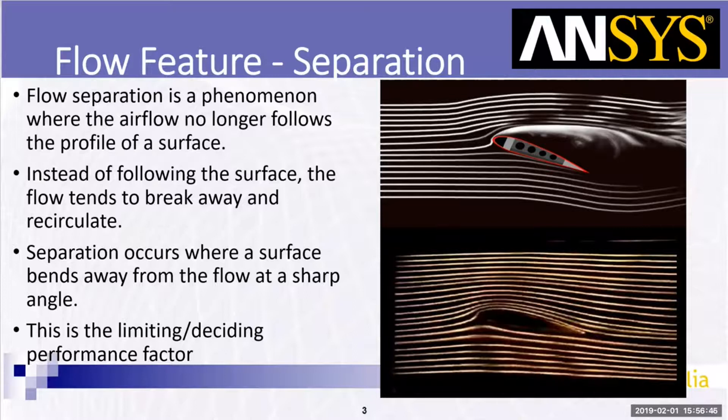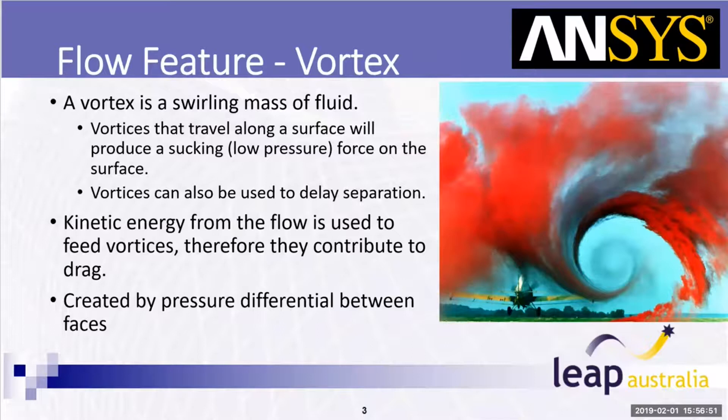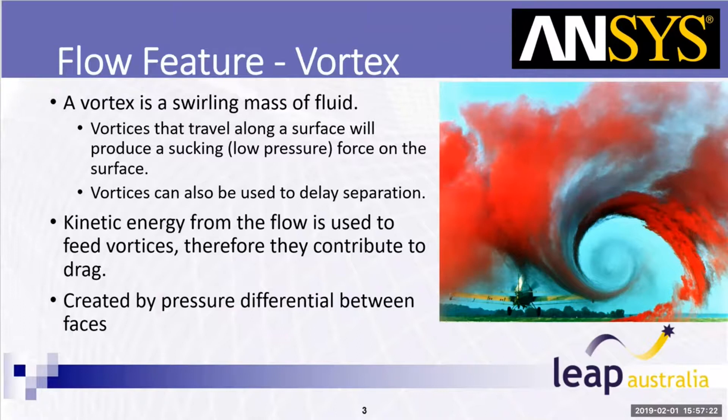Another flow feature — a bit more complex — is the vortex. We know vortices in day-to-day life: when stirring tea you can see vortices coming off the spoon. They come off plane wings and pretty much every lifting surface because they're created by a pressure differential between close faces. The air on the high-pressure side wants to spin around into the low-pressure side, and as it travels longitudinally it spins in a vortex fashion.